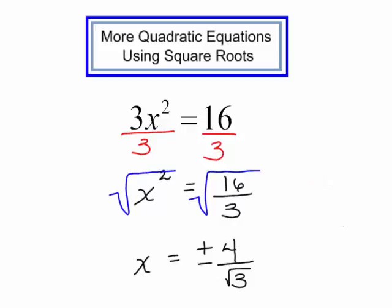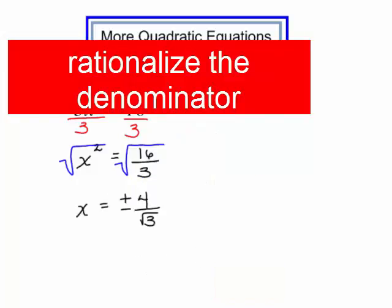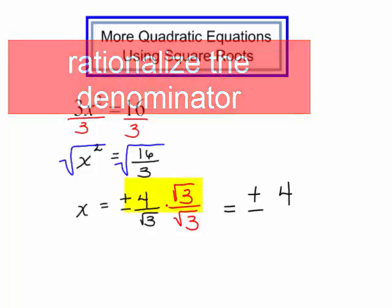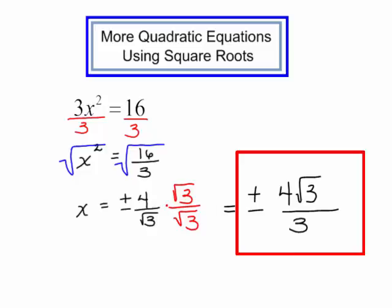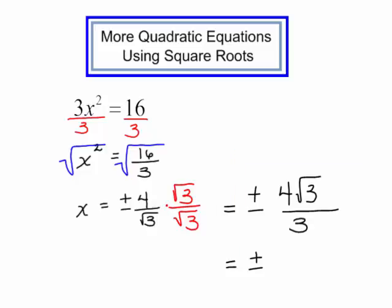I do have a radical in the denominator, so I need to rationalize that denominator. I will multiply the numerator and the denominator by the square root of 3 — don't forget the plus or minus. In the numerator I will have 4 square root of 3. In the denominator, the square root of 3 times the square root of 3 is the square root of 9, which is just 3. So x equals plus or minus 4 radical 3, all of that over 3. You can also see that as plus or minus 4 thirds radical 3.